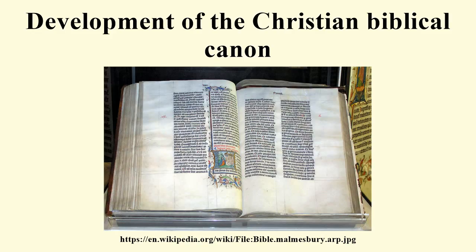By the early 3rd century, Origen of Alexandria may have been using the same 27 books as in the modern New Testament, though there were still disputes over the canonicity of Hebrews, James, 2 Peter, 2 and 3 John, and Revelation — see also Antilegomena. Likewise, by 200, the Muratorian fragment shows that there existed a set of Christian writings somewhat similar to what is now the New Testament, which included four Gospels and argued against objections to them. Thus, while there was plenty of discussion in the early Church over the New Testament Canon, the major writings were accepted by almost all Christian authorities by the middle of the 2nd century.